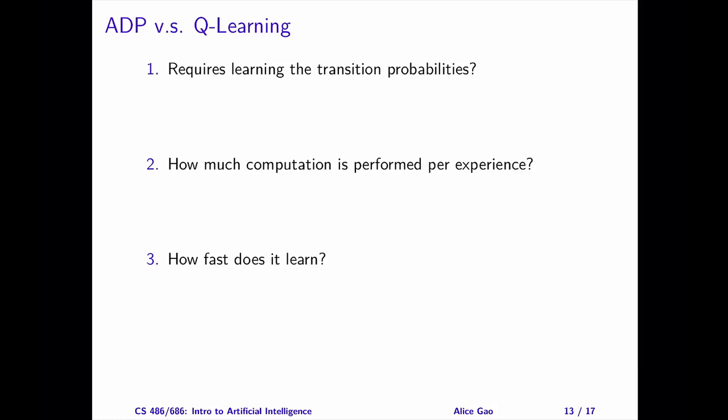On the other hand, Q-learning performs a simple update based on the observed transition only. It does not try to keep the Q values consistent between neighboring states. As a result, Q-learning requires less memory and computation time.